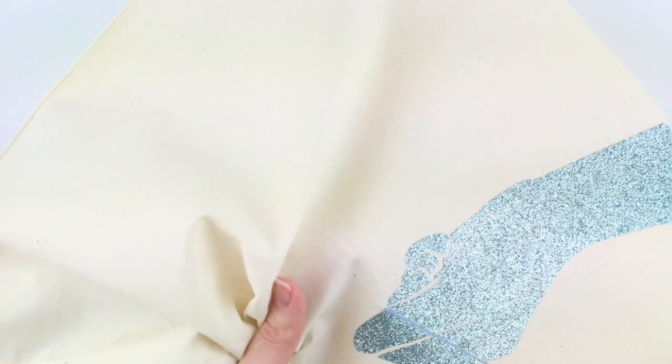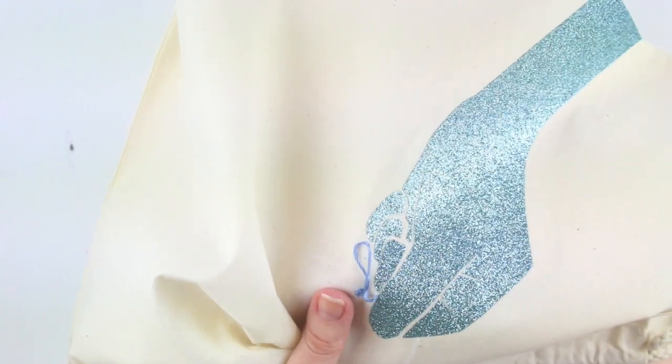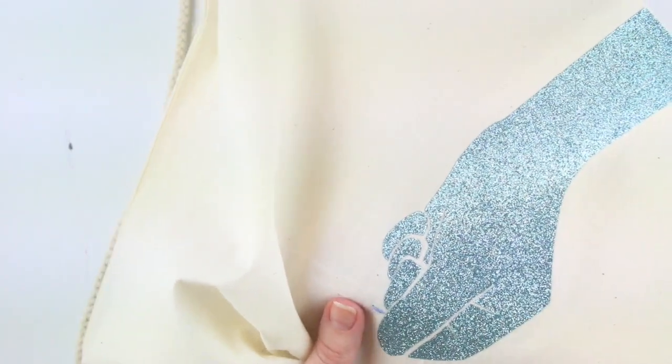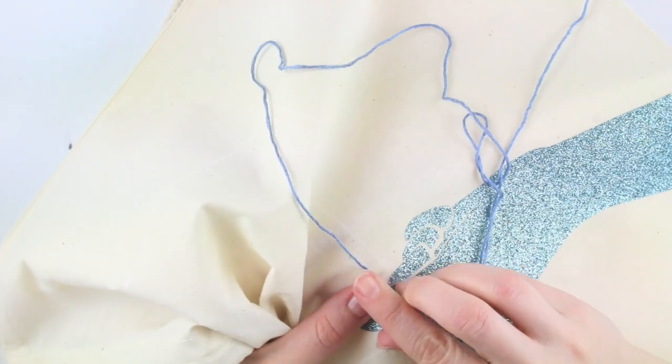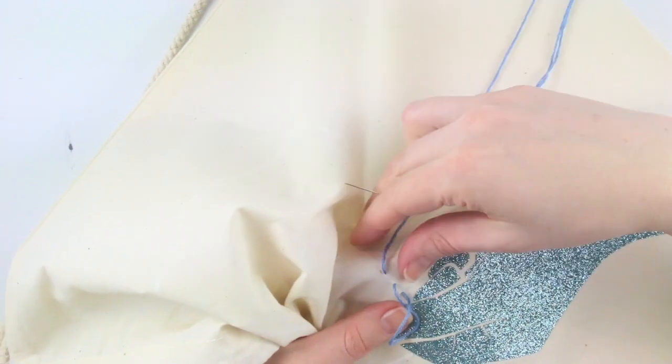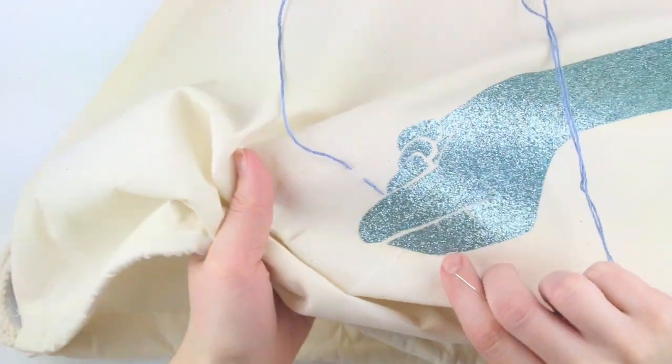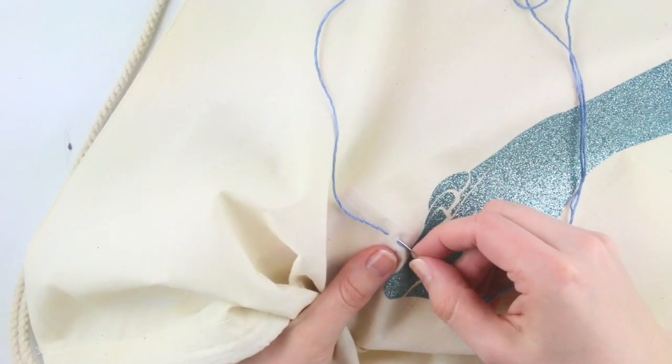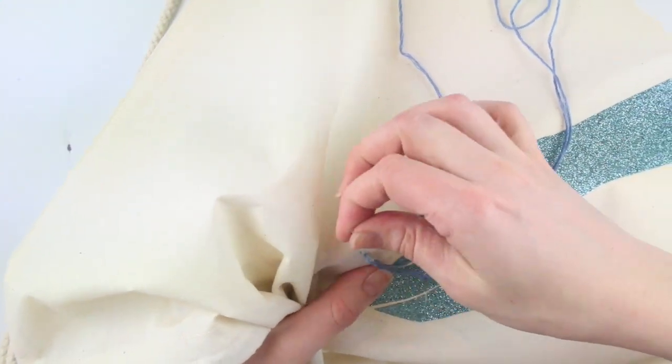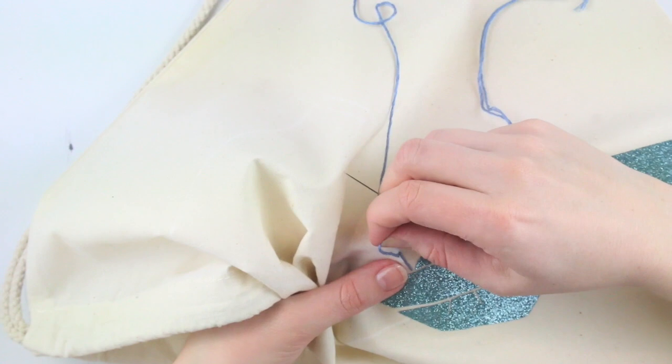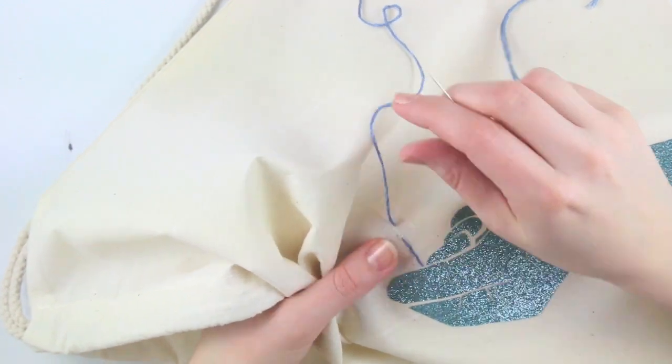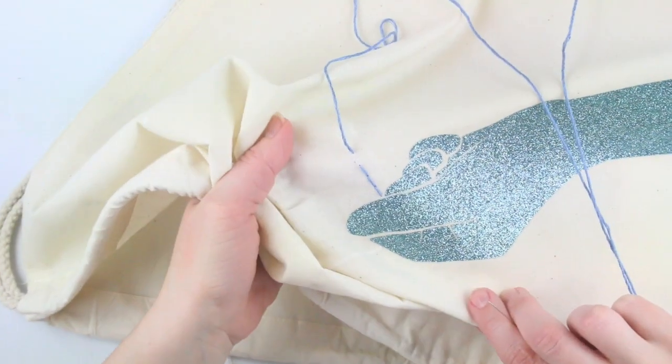Use backstitch to sew around the outside of the envelope following your white lines. Bring your needle up through the fabric 1cm along then back down at the start. Then sew up again 1cm long from your previous stitch and back down through the previous hole to connect the stitches together. Keep sewing in this way. As you go along, straighten your stitches to make sure they're not pulling too tight and tugging your fabric.